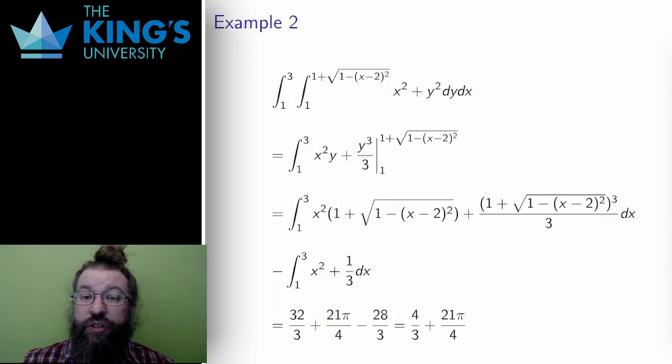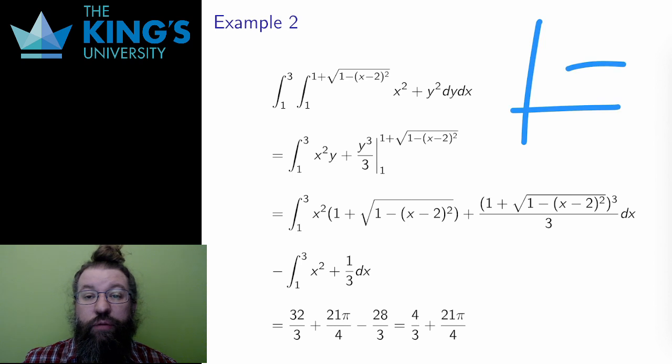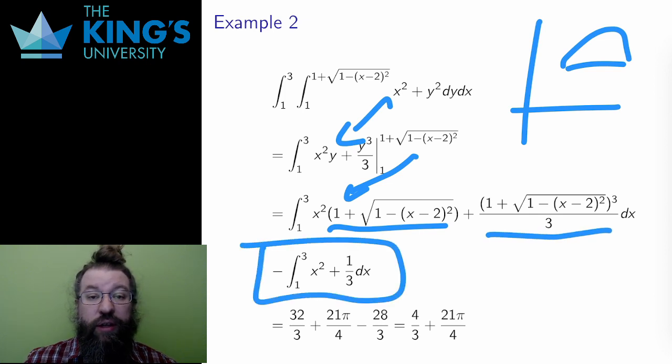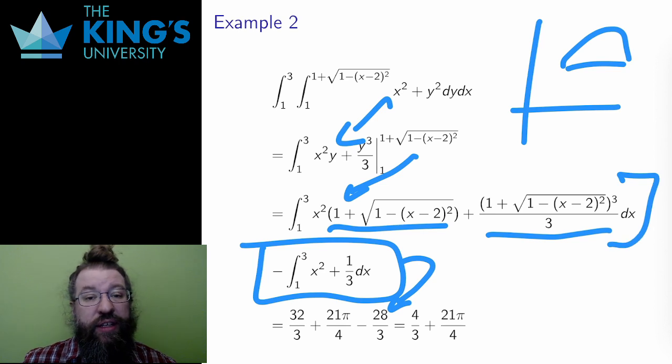For the second integral, the half circle, I again integrate first in y, and then evaluate on the bounds. The bounds here are complicated, and I've split them into two integrals, one for the top bound and one for the bottom. The second negative piece is a pretty simple polynomial integral, and results in -28/3. The first, however, is a real beast. It involves a substitution u = x - 2, and then a complicated trig substitution.